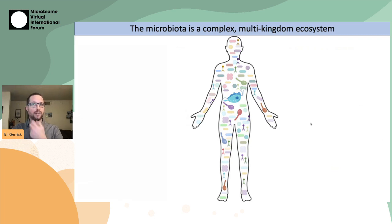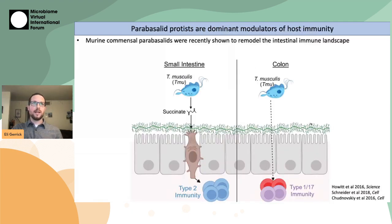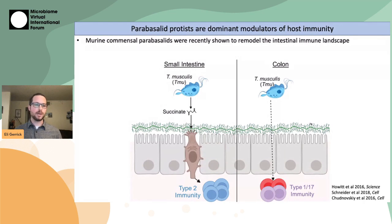Very recently, it was found that these protists can actually have really dominant effects on the host immune response. In particular, this work has been done using parabacillid protists, which are protists in the parabacillia phylum. Most of the work has been done using a protist named Tritrichomonas musculus, or T. musculus.